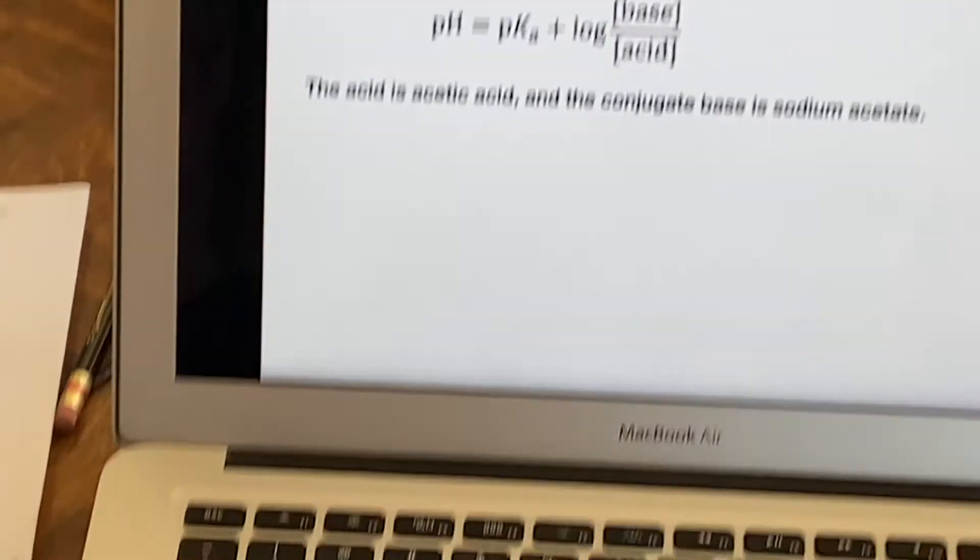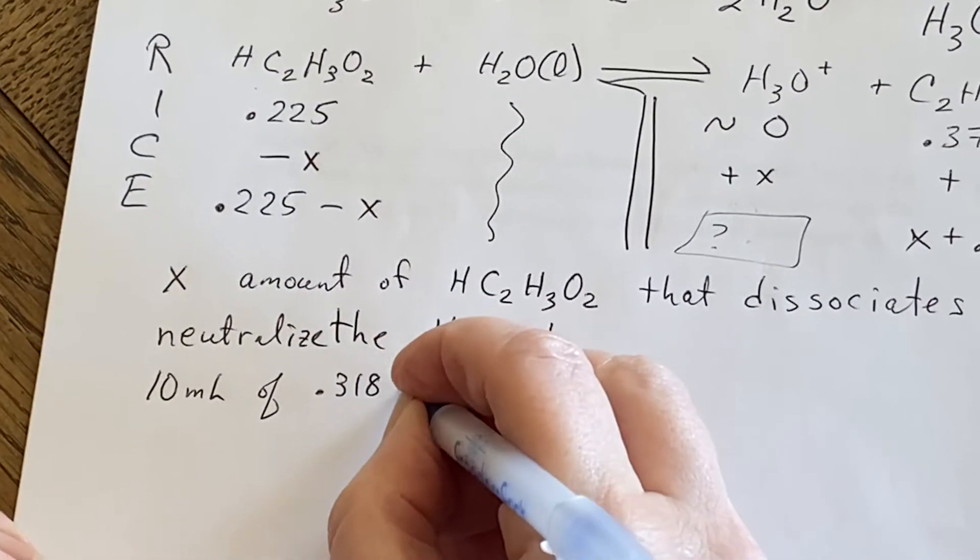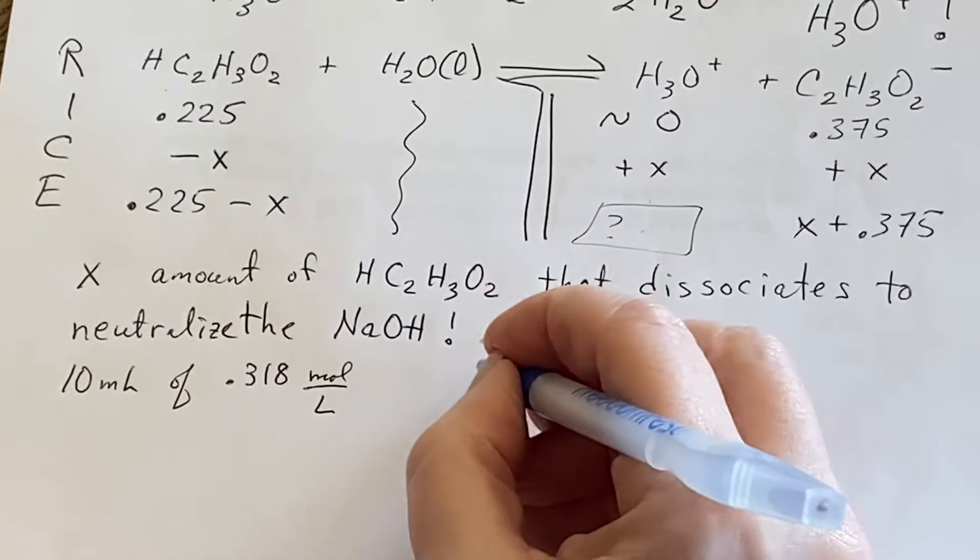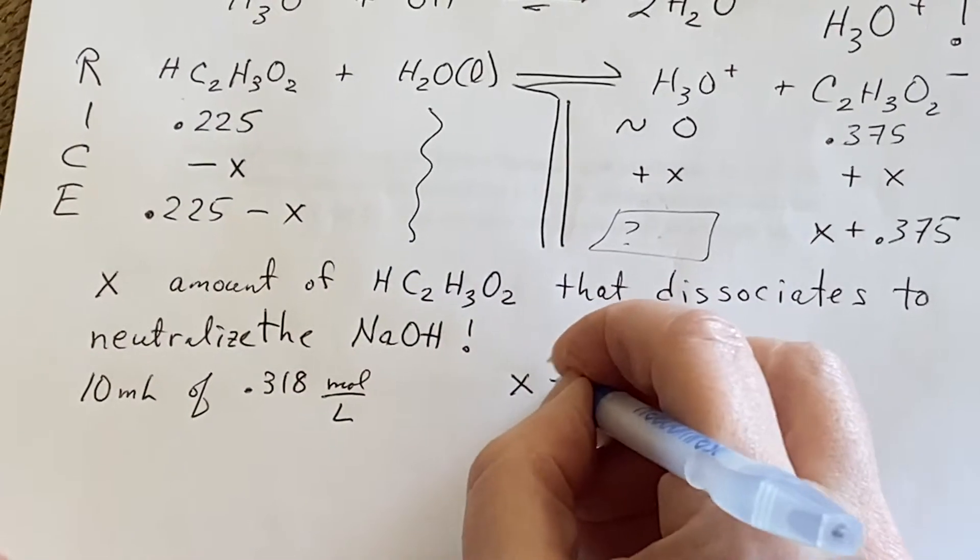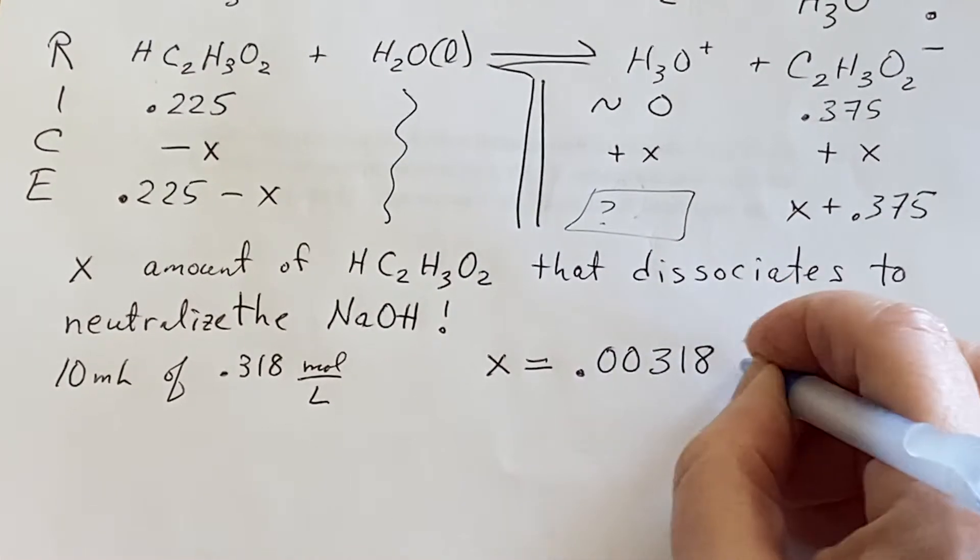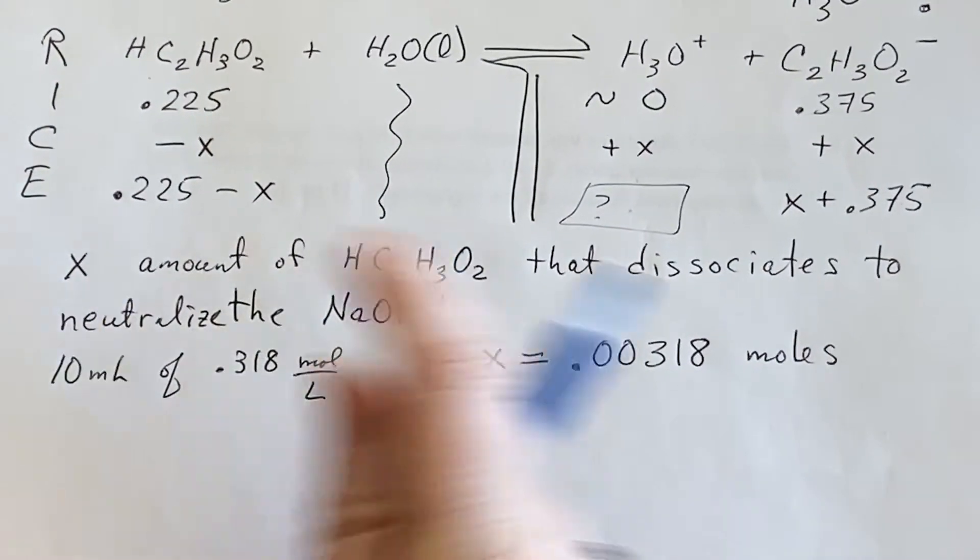10 milliliters of 0.318 molar. That's moles per liter. I will end up saying then that x would have to be 0.00318 moles.